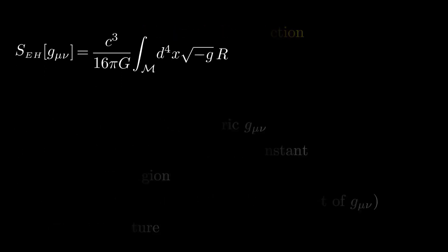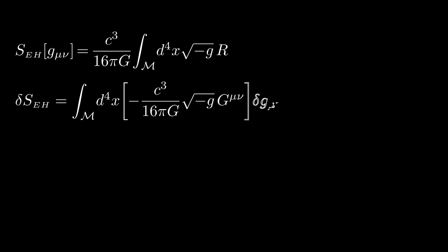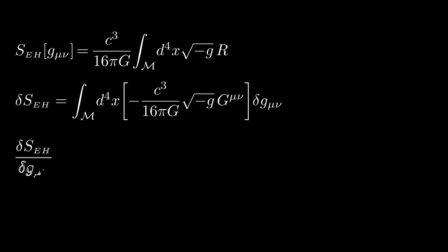In this video, I'll show that the variation of the Einstein-Hilbert action is given by this result, where big G mu nu is the Einstein tensor. It's useful to define the functional derivative as the coefficient of delta G mu nu in the integrand, so the functional derivative of the Einstein-Hilbert action is defined by the term in square brackets above.